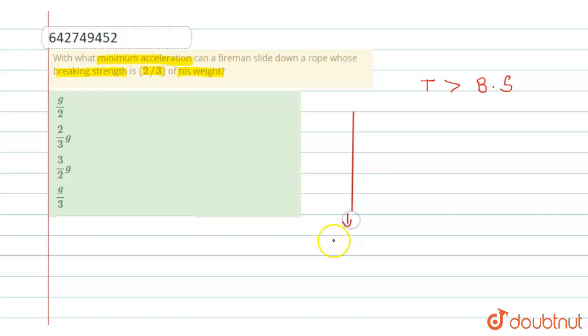And now the downward acting force is mg and tension is upward and there is another force that is m into a.